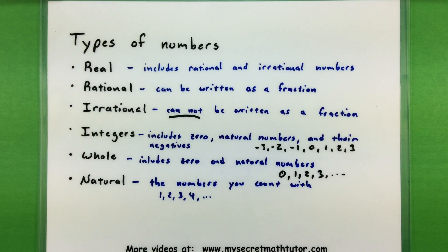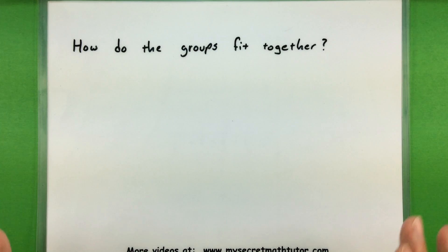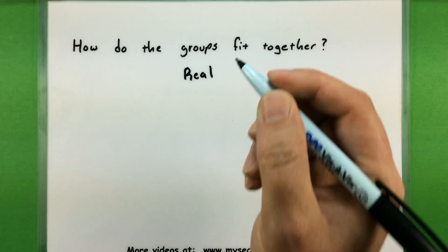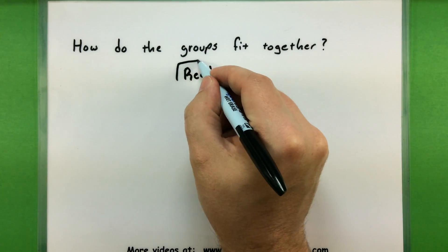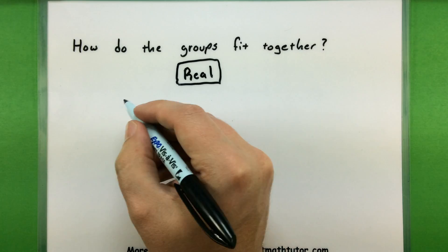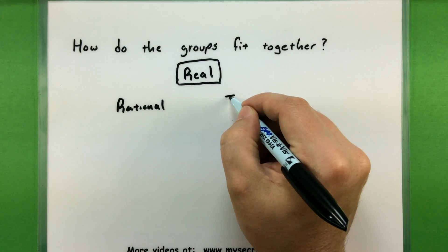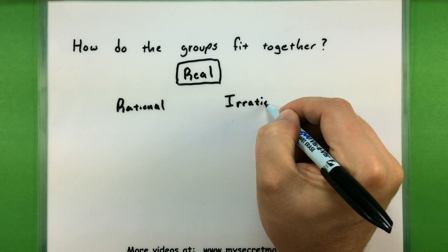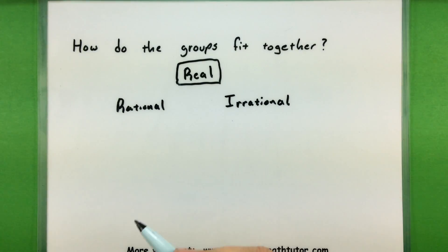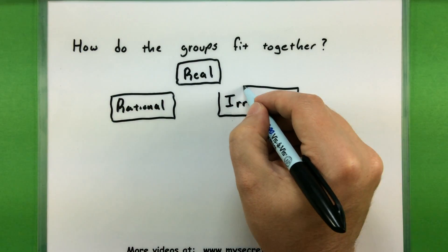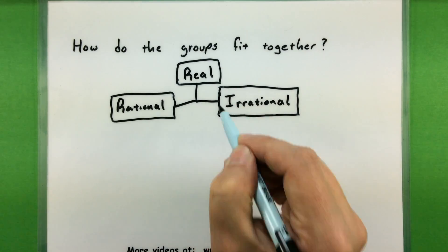These numbers fit in with one another, and it's good to know how these groups actually fit together. So let's go ahead and create a diagram so you have a better sense of what I'm talking about. At the very top you can consider our real numbers, and the real numbers can really be split into two different groups. So the real numbers contain both rational numbers and irrational numbers — let's go ahead and box these.